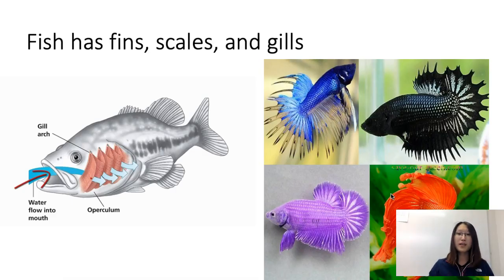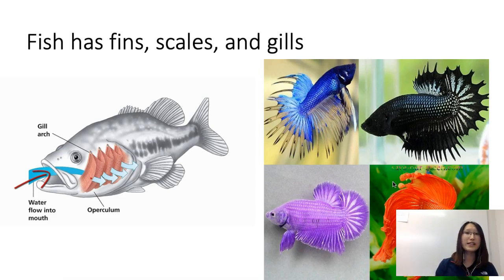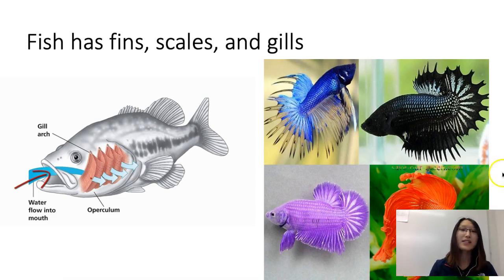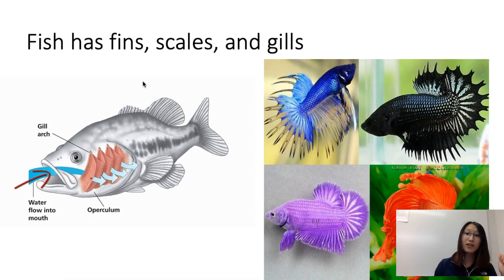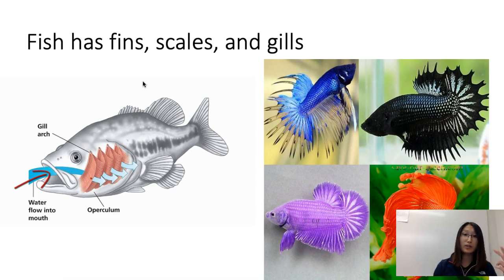Now let's talk about some characteristics of different types of animals, starting with fish. Fish have fins to help them swim, and they have scales. Scales allow fish to move around more freely in the ocean, can attract mates through color, can scare off predators, and can also protect the fish so they are not as easily hurt.